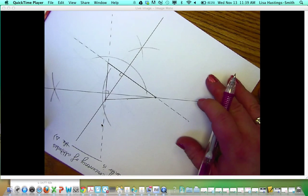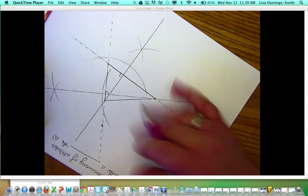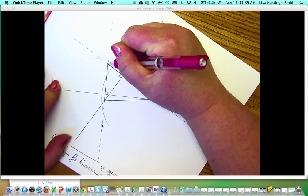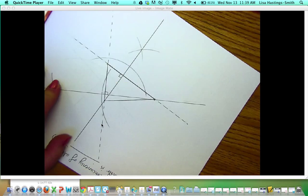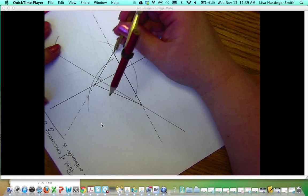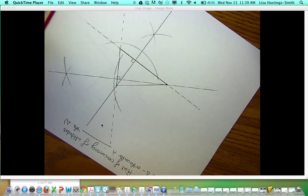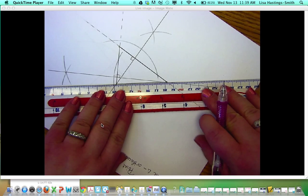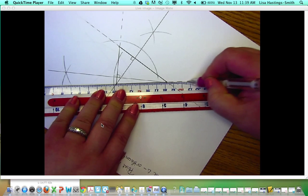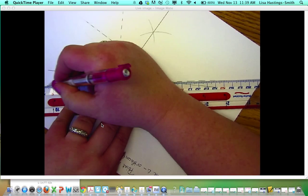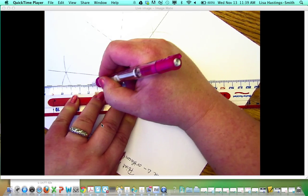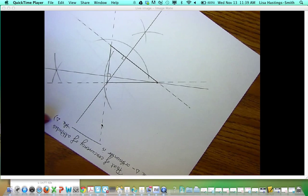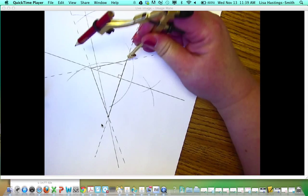And then my third side of the triangle is this side here. And then I'm going to go from this vertex, I'm going to make, I'm going to stretch this side out a little bit.